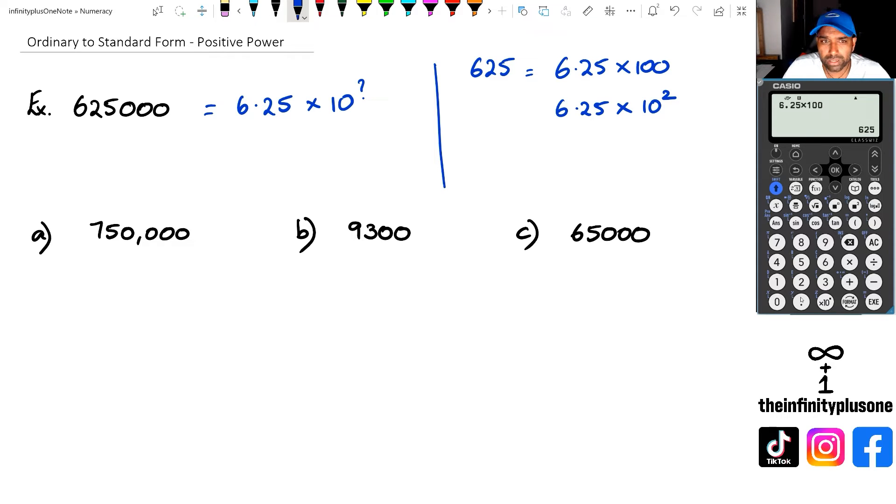What number do I multiply by 6.25 to get to 625,000? I'm going to show you a couple of ways. The long method is taking 625,000 and dividing it by 6.25. When I do this, I'm getting 100,000. But I also know that 100,000 can be written as 10 to the power of - I count the number of zeros: 1, 2, 3, 4, 5. That is 10 to the power of 5.